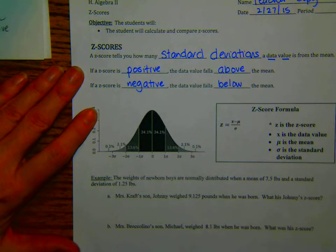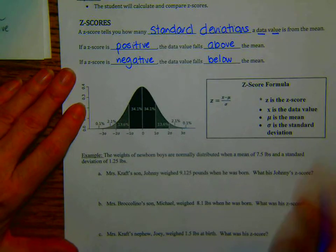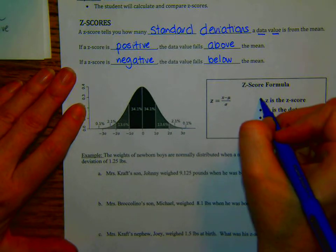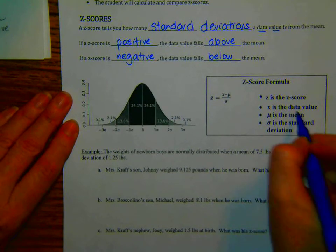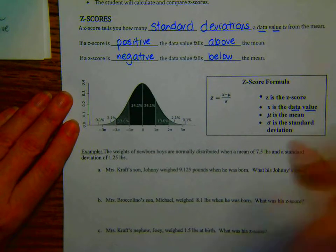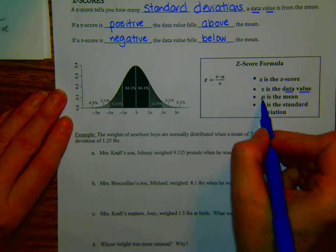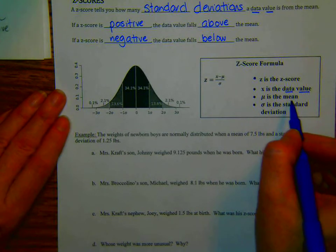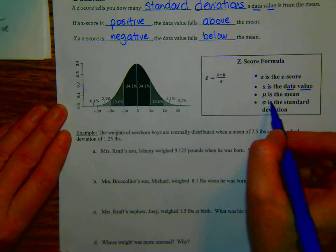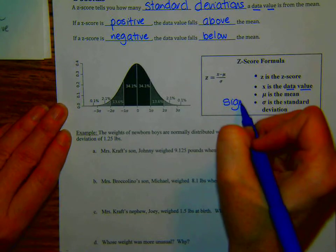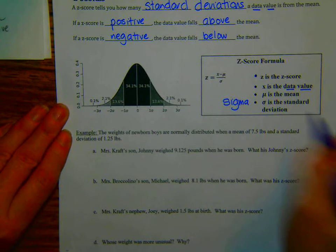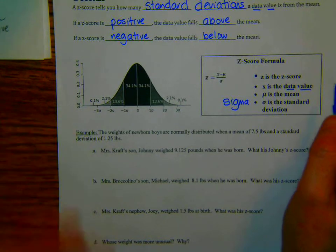Okay, so we're going to learn a few new variables. z is the z-score, not surprising. x is the data value that we're looking for. This little character is called mu, and it is the mean, the average data. This is called sigma. So let's write that out. Sigma is the standard deviation for whatever data we're looking for.